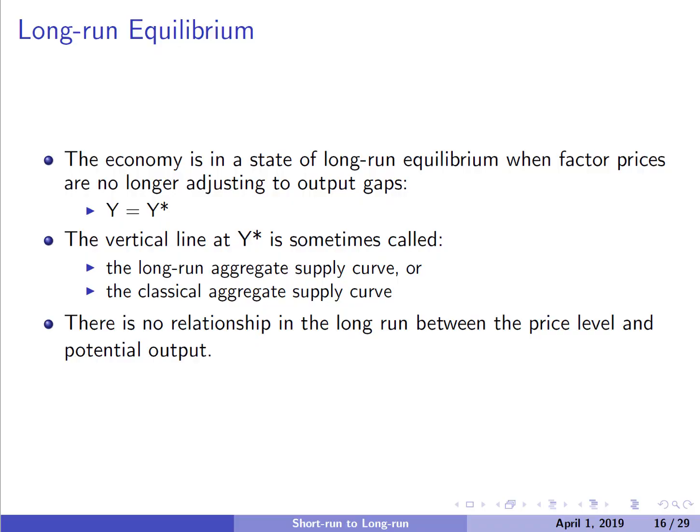Long-run equilibrium is the economy in a state where factor prices are no longer adjusting to output gaps. That happens when actual Y equals potential Y. So we're at the point where the AD curve crosses Y-star, that vertical Y-star curve. This vertical Y-star is sometimes called the long-run aggregate supply curve, or the classic aggregate supply curve, because long-run equilibrium is just the intersection of the AD curve with Y-star.